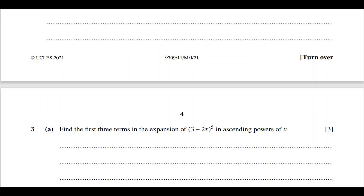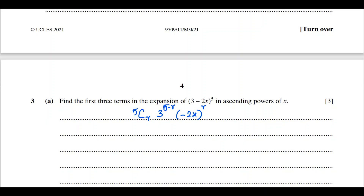Find the first three terms in the expansion of (3 minus 2x)^5 in ascending powers of x. This is a binomial expansion question. First, we write the general term: 5Cr × 3^(5-r) × (-2x)^r.